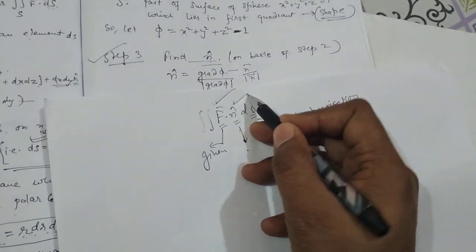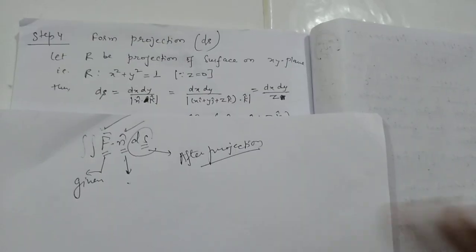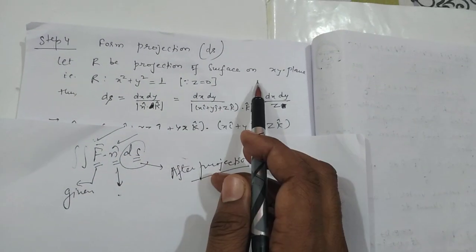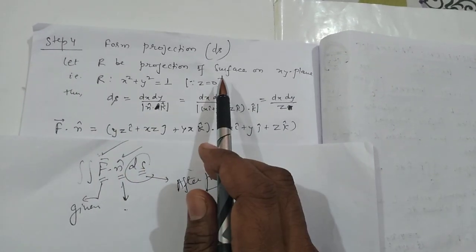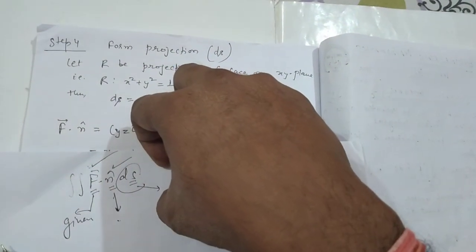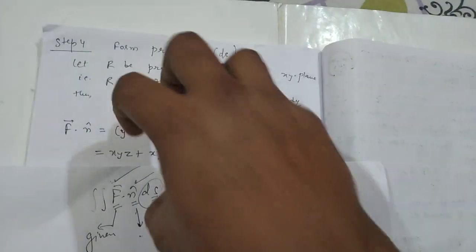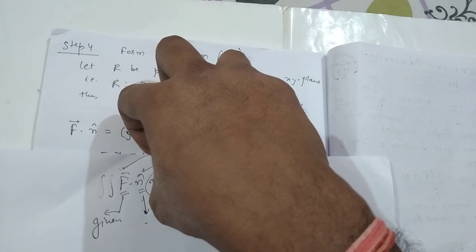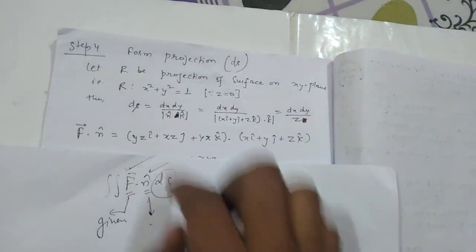Now we have F and n̂. Next we need dS. We will take the projection on the xy-plane. When z = 0, the sphere x² + y² + z² = 1 projected onto the xy-plane gives a circle. The formula for dS when projecting onto the xy-plane is: dS = dx dy / |n̂ · k̂|.